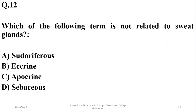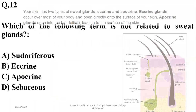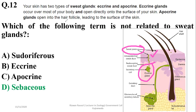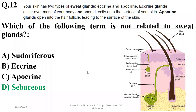Question 12: Which of the following terms is not related to sweat glands? Sweat glands are also known as sudoriferous glands. There are two types: eccrine and apocrine. Sebaceous glands, however, are responsible for secretion of sebum — not sweat. So the right option is D. Eccrine glands open directly onto the skin surface through sweat pores, while apocrine glands open into the hair follicle.